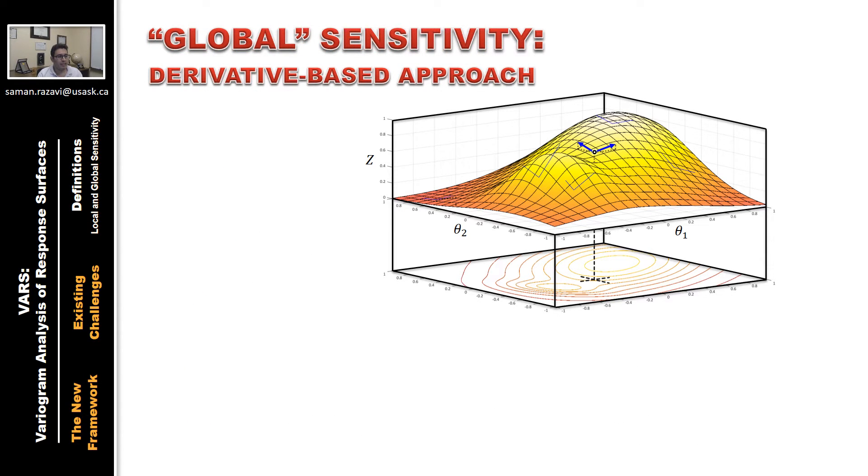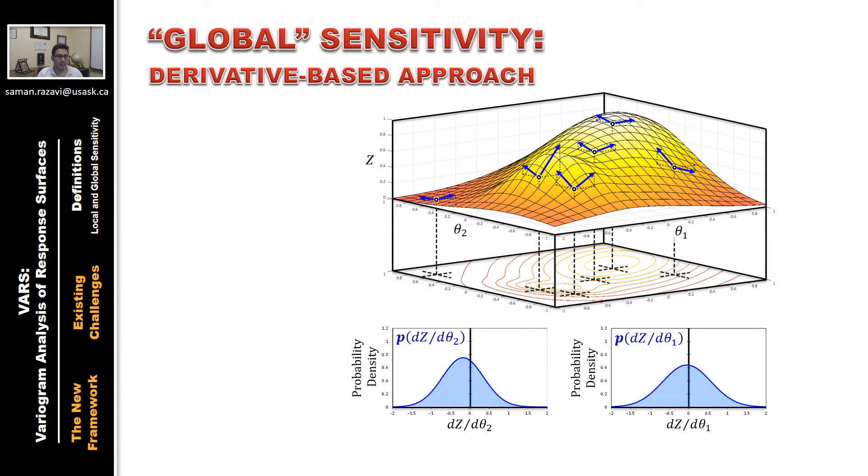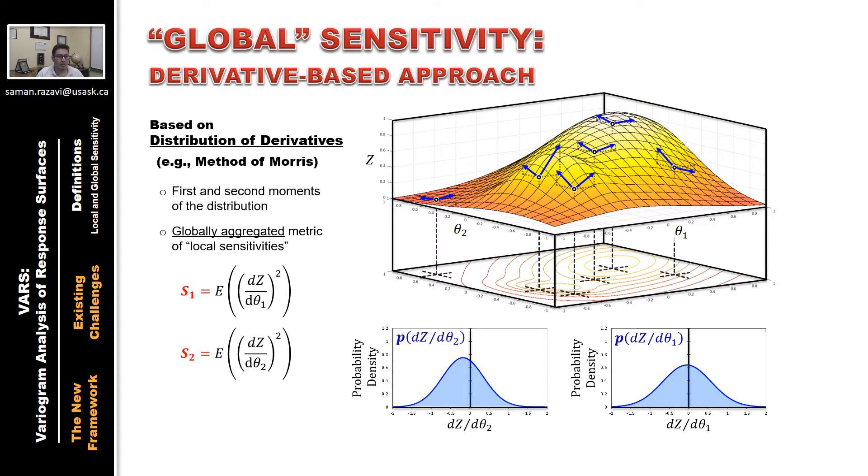We frequently need to globalize such a tool to characterize the properties of the response surface across the entire parameter space. Probably the most intuitive way of globalization is to sample derivative information across the parameter space and combine them. Then technically we would be dealing with probability distributions of local sensitivity for each individual parameter. So it's common to use the first moment of these distributions and sometimes the second moment as well, as the global sensitivity metrics.